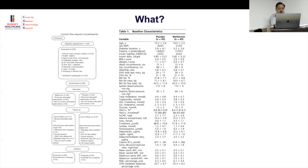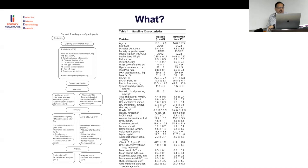The CONSORT diagram shows that 428 were assessed for eligibility and 90 were finally included. Given the complexity of the study procedures, 90 is a reasonable and good sample size.